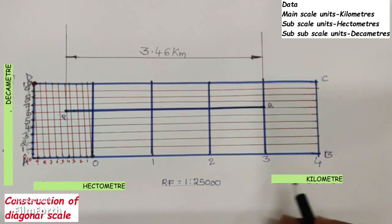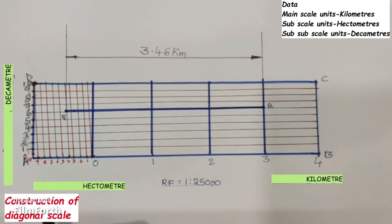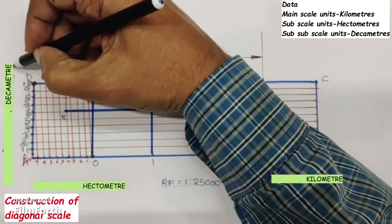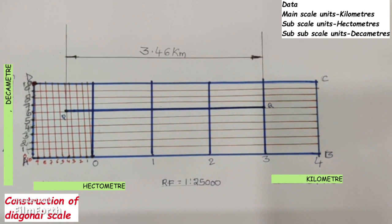The main scale units are kilometers, sub-scale units are hectometers, and sub-sub-scale units are decameters. For this diagonal scale problem, we need to have perfect clarity about unit conversions related to kilometers, hectometers, and decameters. That's about the solution to the given problem.